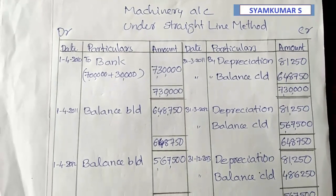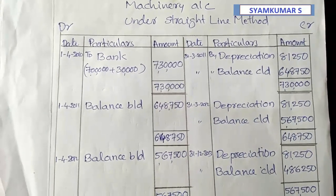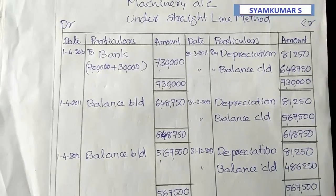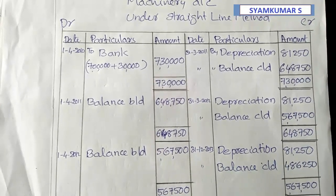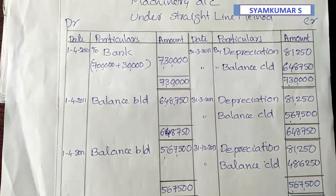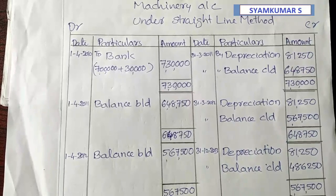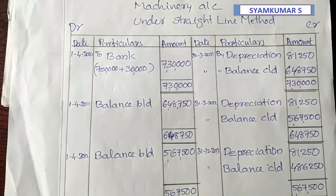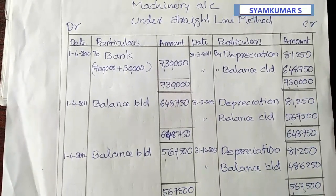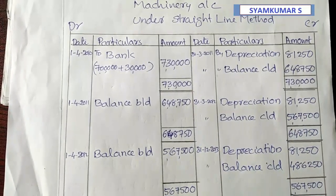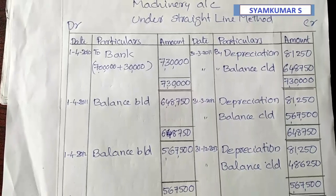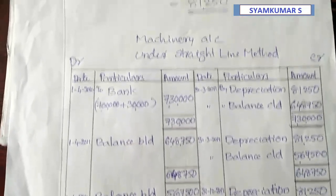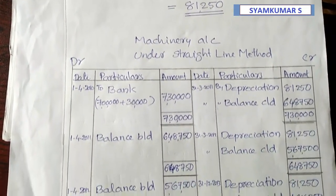The machinery account has a debit side and a credit side, with 6 columns: date, particulars, and amount on each side. The journal entry for purchase is: Machinery Account debit to Bank, total amount Rs. 7,00,000. In the first year, the depreciation charged is Rs. 81,250.